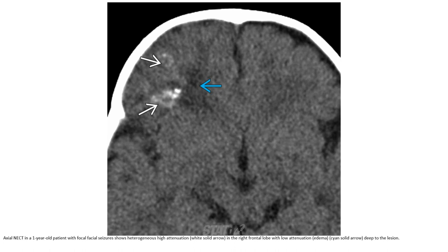Non-contrast CT in a one-year-old patient with acute seizure demonstrates heterogeneous high attenuation in the right frontal lobe with low attenuation deep to the lesion.